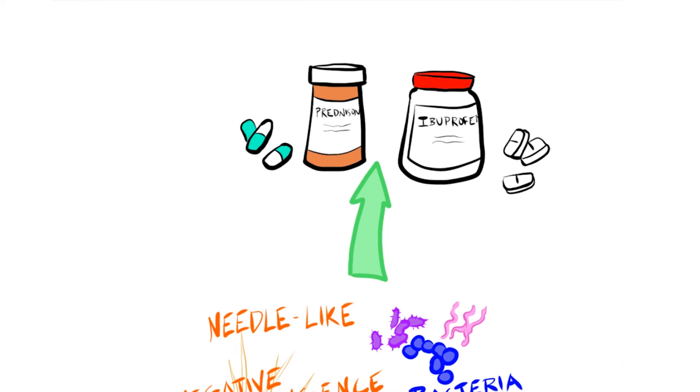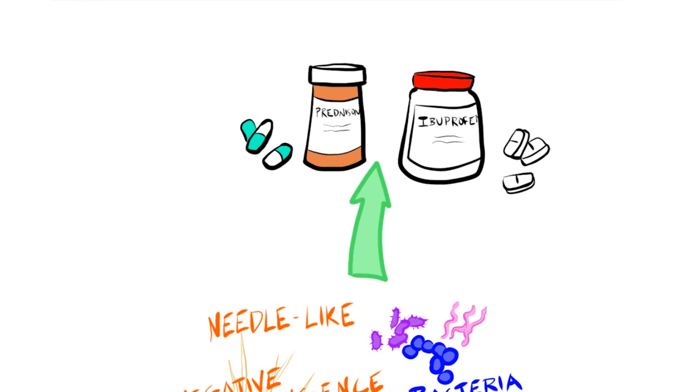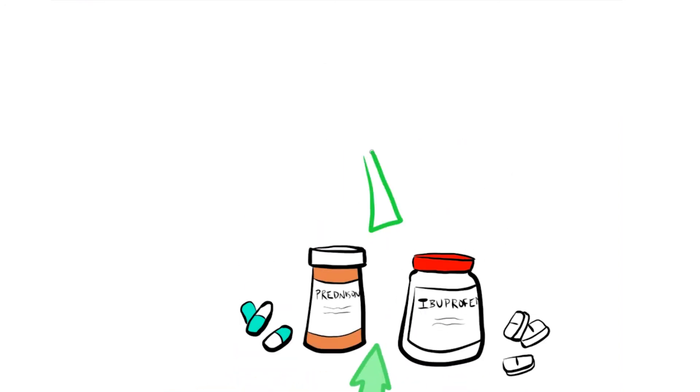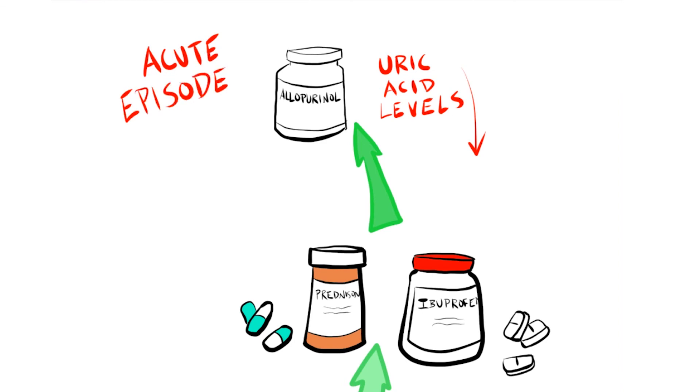Once the acute episode of gout has resolved, measures can be taken to prevent or at least limit future episodes. Lifestyle changes including avoiding foods rich in purines can be helpful. A medication known as allopurinol can lower uric acid levels making future episodes less likely. However, allopurinol should not be given during an acute episode as this may make things worse.